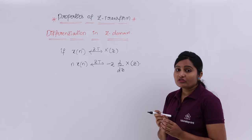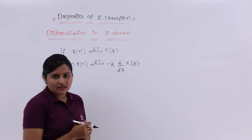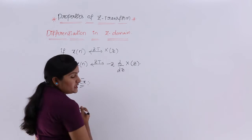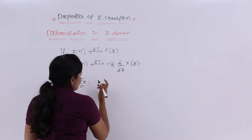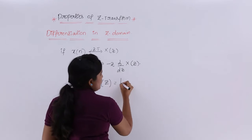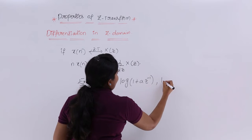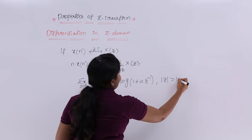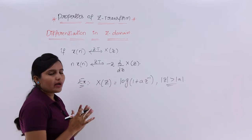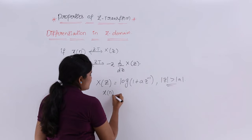Without this property we cannot solve certain problems. For example, consider this problem: I am having X(Z) = log(1 + AZ⁻¹) with ROC: |Z| > |A|. I am asked to find out what is the signal related to this transform.